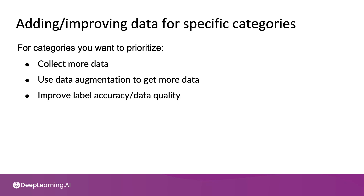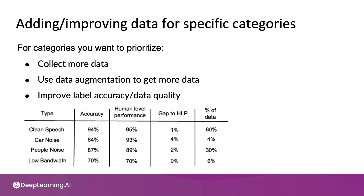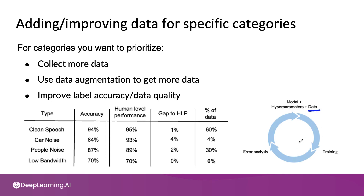One topic we'll discuss next week is how to improve label accuracy or data quality — you'll learn more about this when we talk about the data phase of the machine learning project life cycle. In machine learning, we always would like to have more data, but going out to collect more data generically can be very time consuming and expensive. By carrying out this analysis, you can be much more focused in exactly what types of data you collect — whether that's car noise or people noise — without wasting time collecting more data from a low bandwidth cell phone connection.